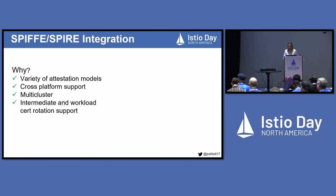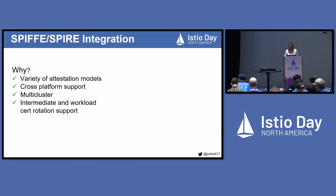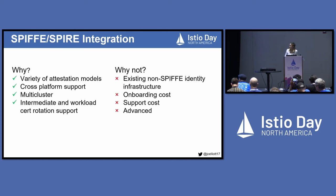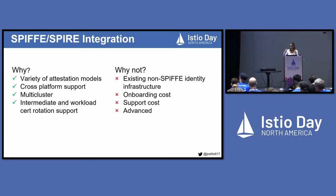Why would this solution be appealing? SPIRE provides a variety of attestation plugins that enable identity verification across a variety of platforms. By the same reasoning, the flexibility of SPIRE makes it a great solution for multi-cluster environments, easily federating identities across multiple clusters. It also provides support for intermediate and workload cert rotation. Why would this not be for you? Maybe you have an existing identity solution incompatible with SPIRE, or you're not willing to move to this attestation model. If you're unfamiliar with SPIFFE and SPIRE, the onboarding costs, future support costs, and complexity may be more than you're willing to take on right now — this is something you can keep in mind for the future.